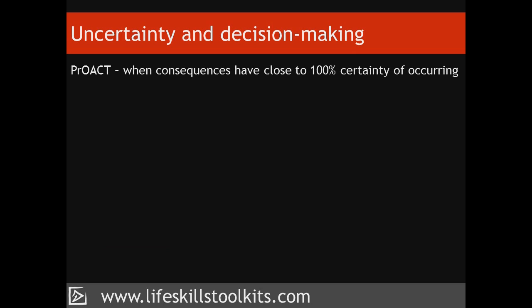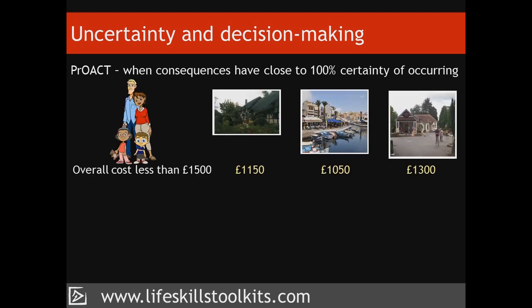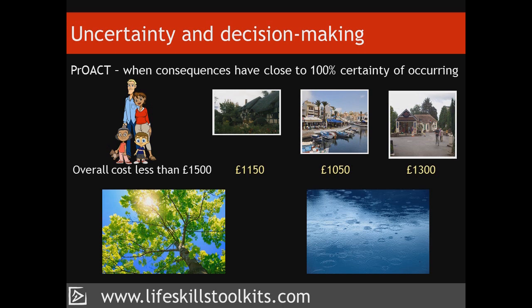We use the PROACT model of decision making when we're confident that the consequences we've identified will happen. For instance, one of the objectives the Petersons used when selecting a holiday was cost. The consequences for each of their alternatives was predictable because they were able to obtain the prices for each holiday. But what would happen if one of the Petersons' objectives was based on the weather? While they could be pretty certain of enjoying a sunny holiday in Crete, expecting day after day of summer sun in the UK is fraught with risk.